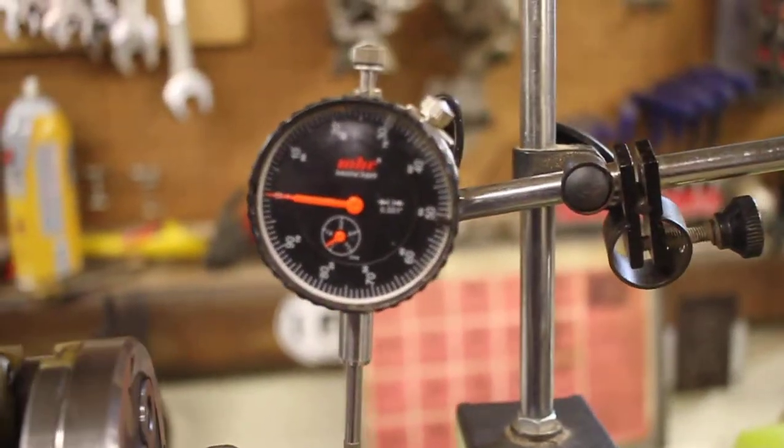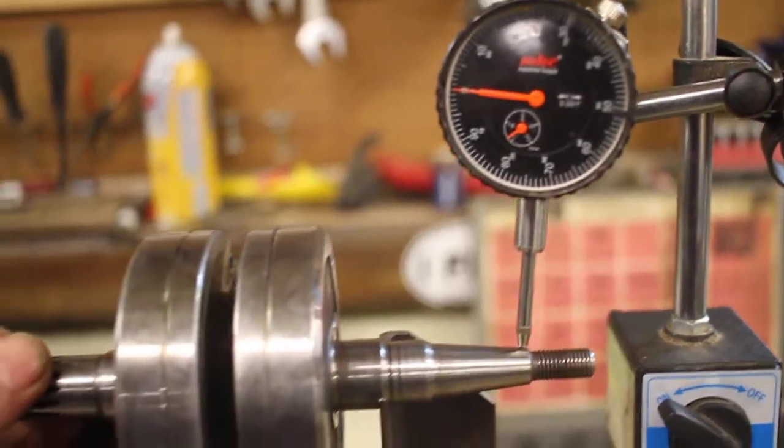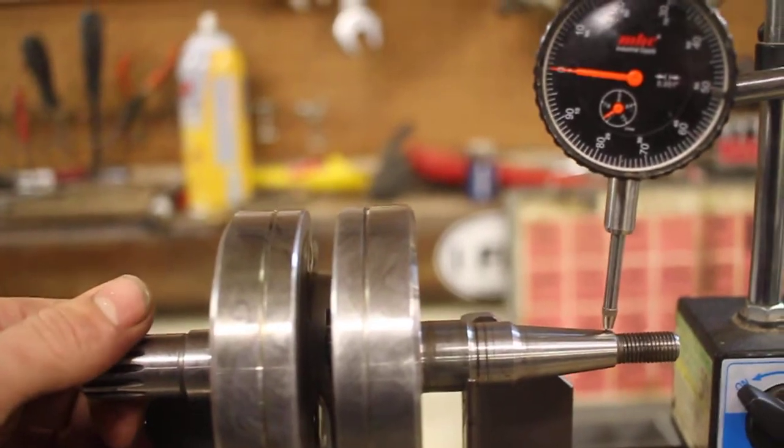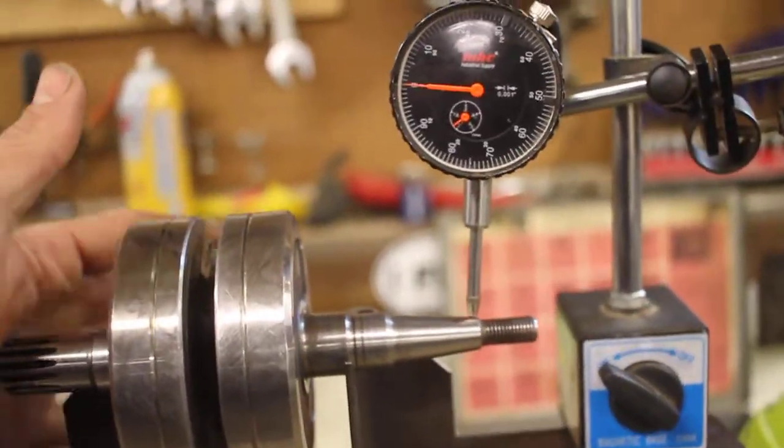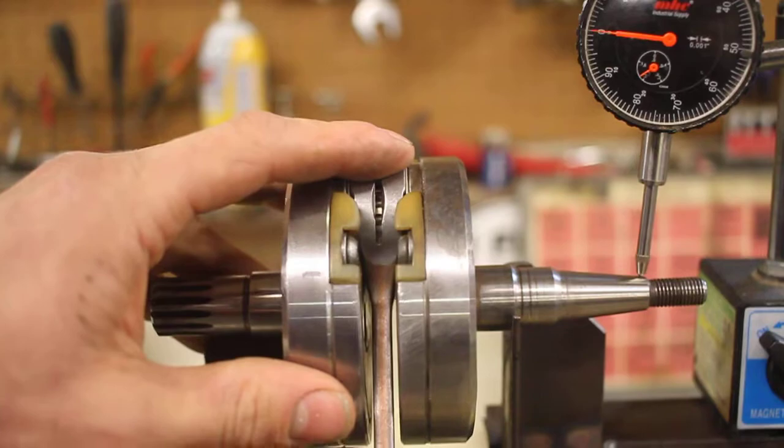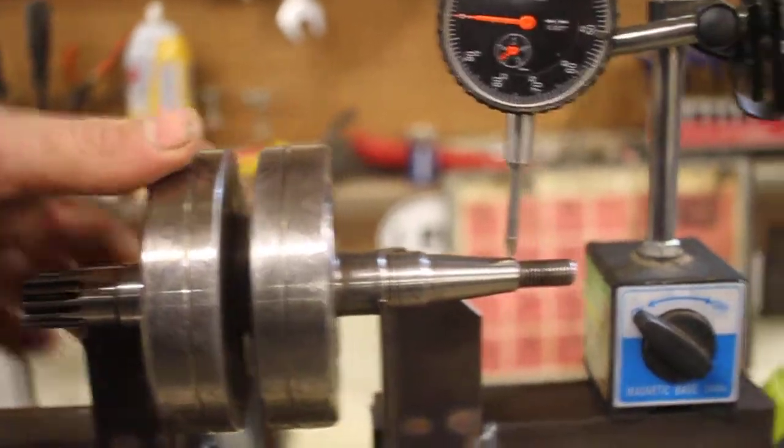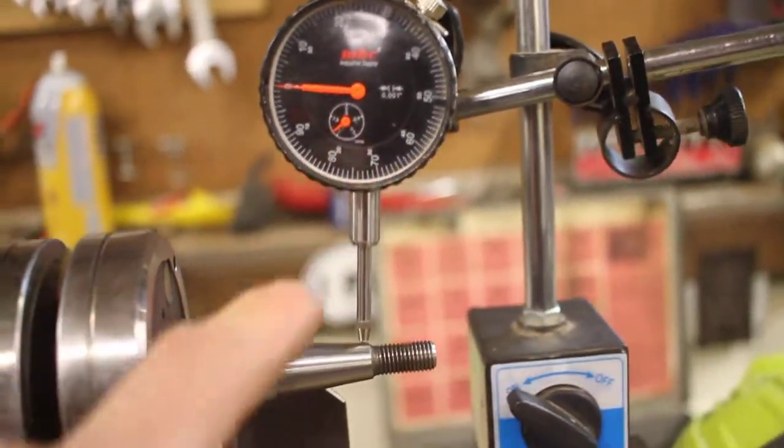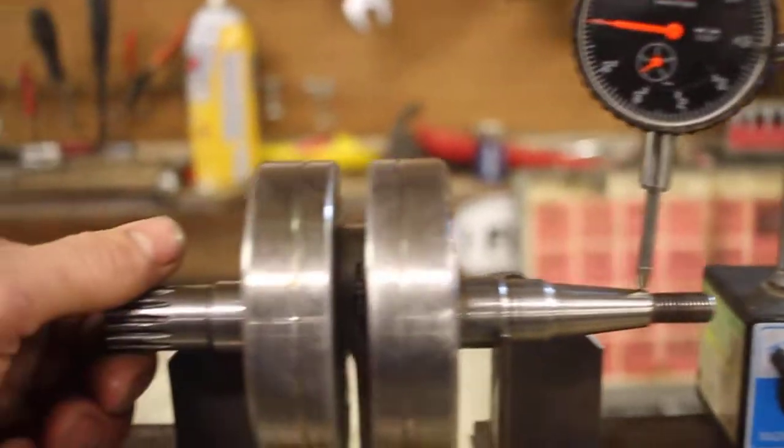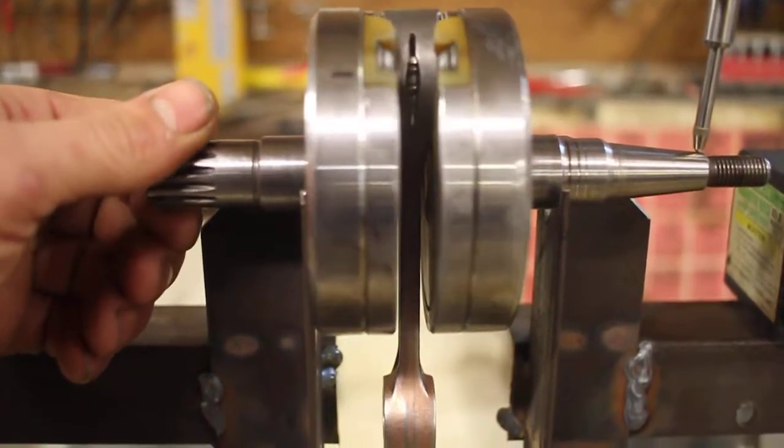So the main direction this one kept going was it would be highest, farthest, with this bearing farthest away. This would measure the highest and then that would tell me to hit it right here.